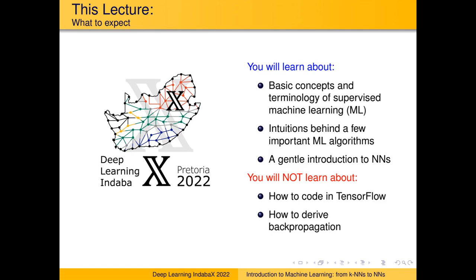Some of you indicated interest in the basics of neural networks, such as how backpropagation works. Yes, backpropagation is important and we will touch on some of the mathematics, but we are not going to derive it or do partial derivatives — there is simply no time. Hopefully I'll give you enough background to study this on your own. Without further ado, let's jump straight into it.